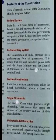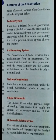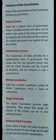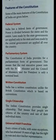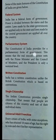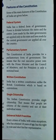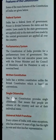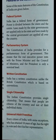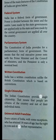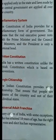The next feature is the parliamentary system. The executive members — MLA, MP, prime minister, council of ministers — and the president as head are all part of the parliamentary system. Another feature is the written constitution. India has a written constitution, unlike the British constitution which is based on conventions.